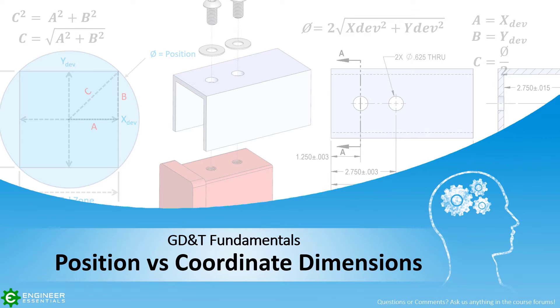So we just showed you how to interpret the position symbol when considering the location of a feature of size. But if most engineers, designers, inspectors, machinists, etc. are all used to seeing coordinate dimensioning and tolerances locate a feature of size, why convert to using the GD&T position symbol in the first place?